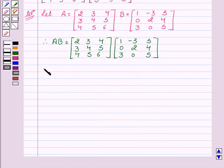So, this is equal to 2 into 1 plus 3 into 0 plus 4 into 3. Then 2 into minus 3 plus 3 into 2 plus 4 into 0.